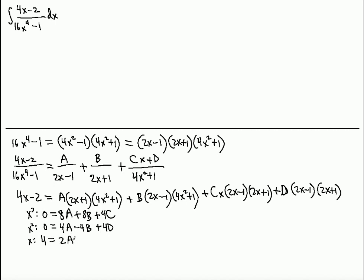For x¹: we get 2A plus 2B minus C. And for the constant term: we get A minus B minus D. So now we have four equations corresponding to the four powers of x.